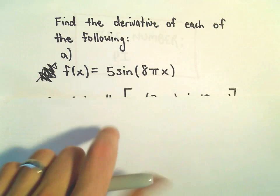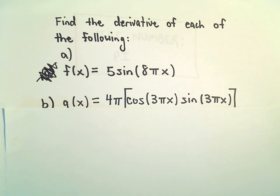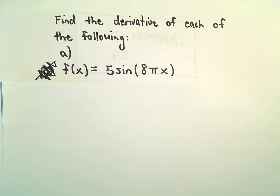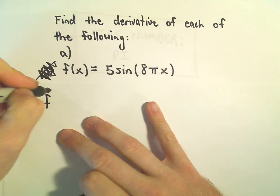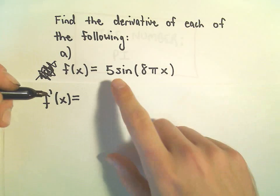In part a, we're going to find the derivative of 5sin(8πx). And the thing to remember is, pi is just a number. Don't do anything different than you would any other times. People sometimes see pi and they want to kind of do different things.